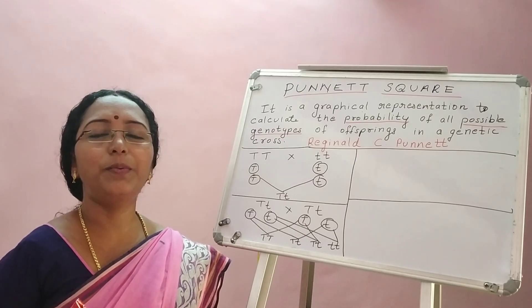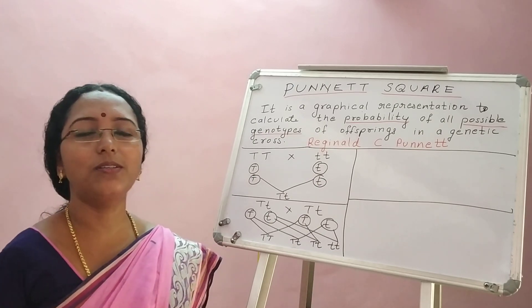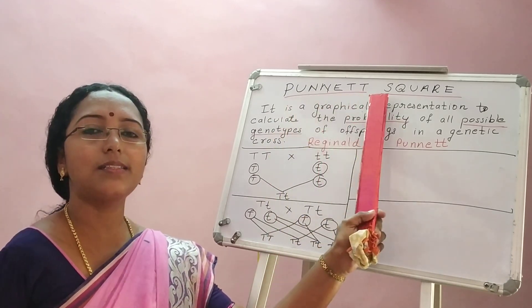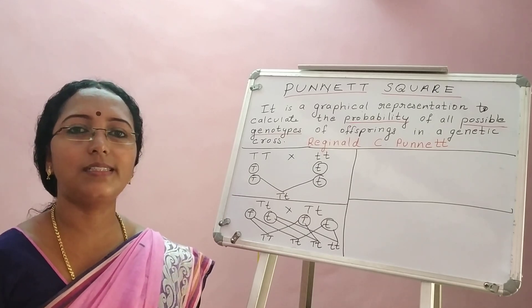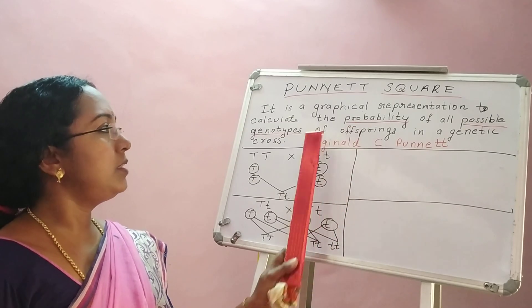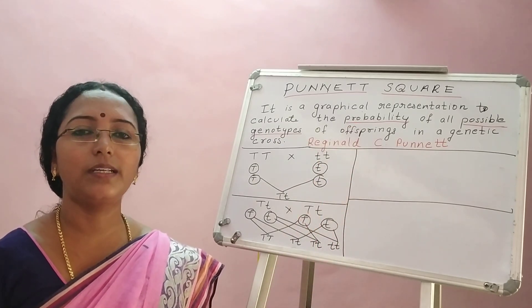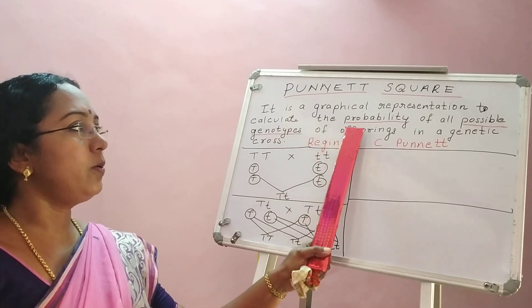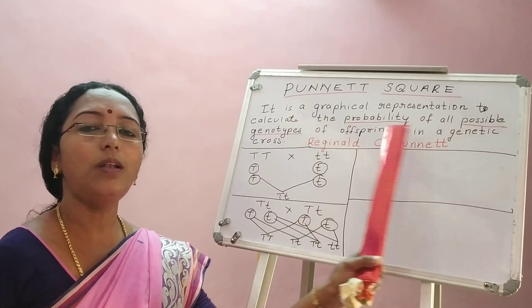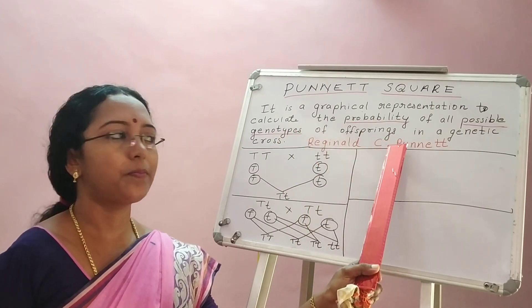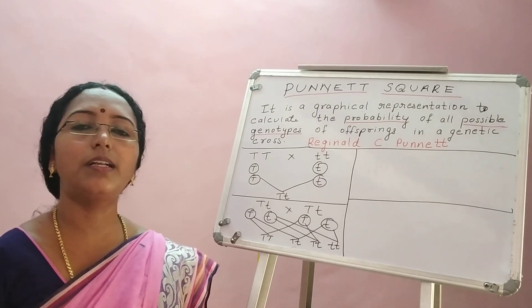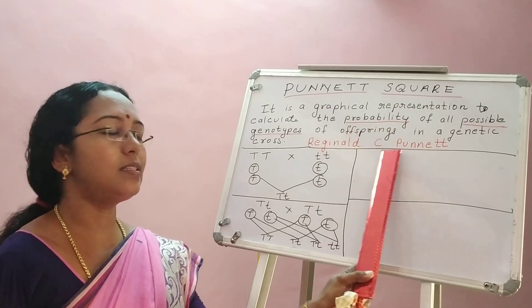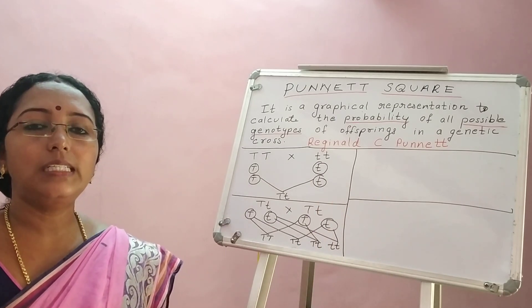In the previous sessions we learned about monohybrid cross. Today, let's learn about a new concept termed Punnett square. This is a very simple concept. It represents the probability of possible genotypes in an offspring in a graphical form. Punnett square is a graphical representation to calculate the probability of all possible genotypes of offsprings in a genetic cross. It was developed by Reginald C. Punnett, a British geneticist.